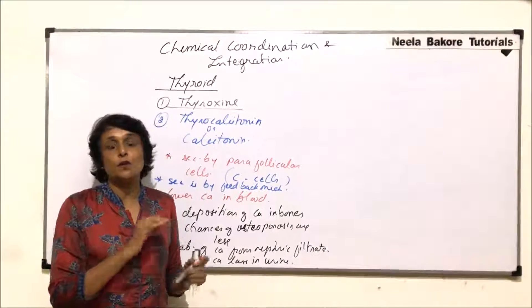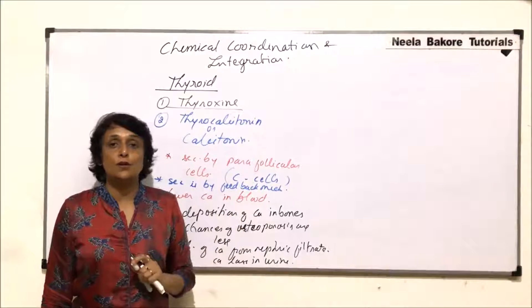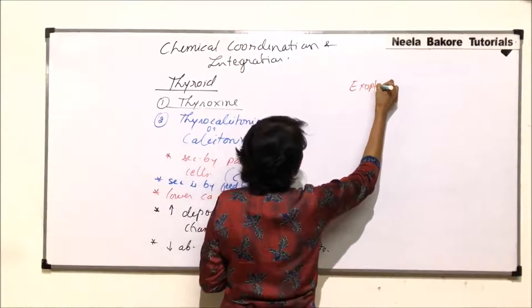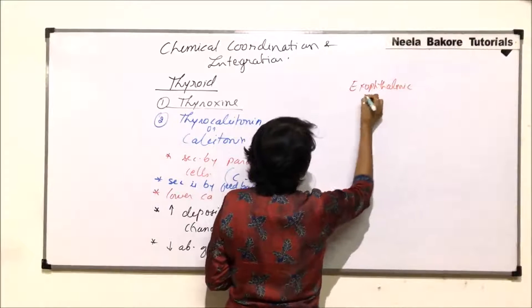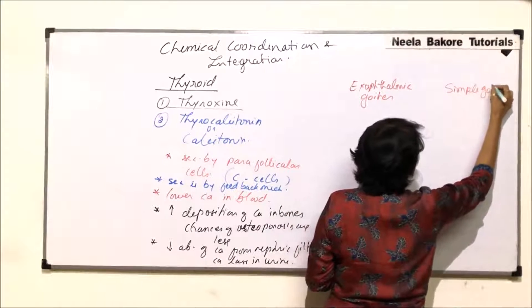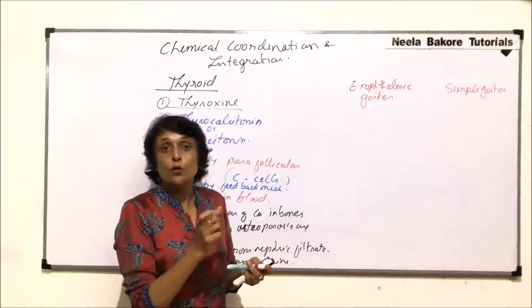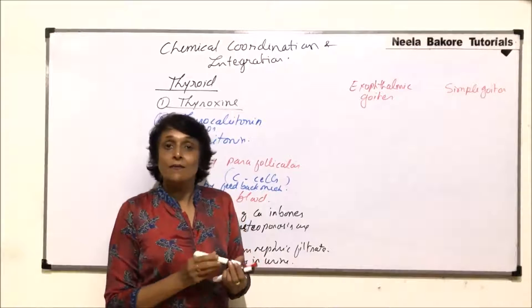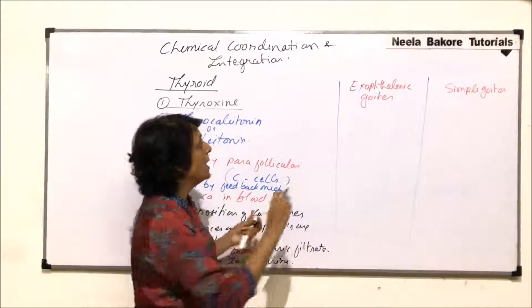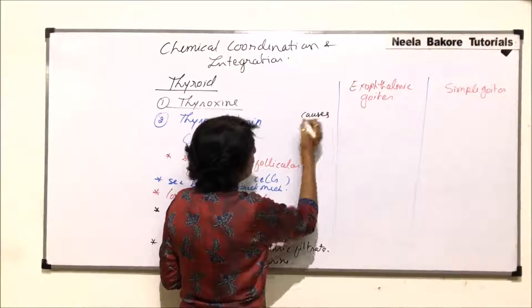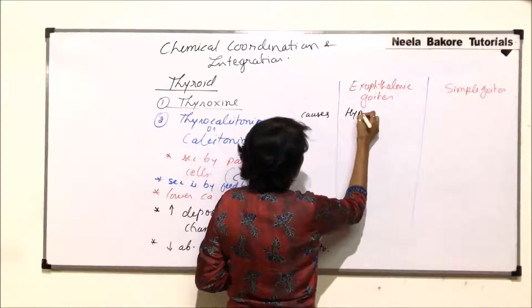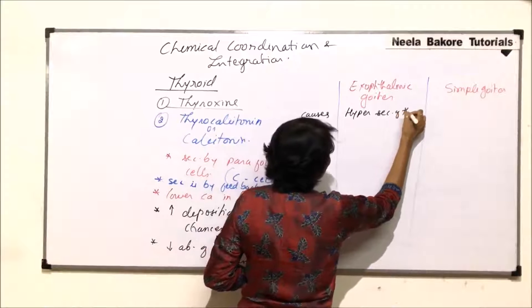After completing the thyroid gland structure and both its hormones, we need to compare two terms used when discussing hypo and hyper secretion of thyroxine: exophthalmic goiter and simple goiter. Both use the word 'goiter,' so let us make a comparison table for these two types.